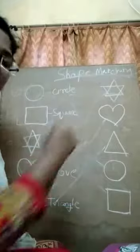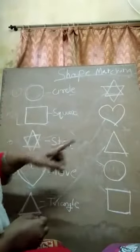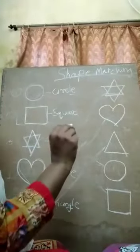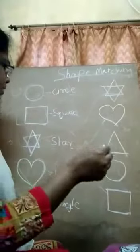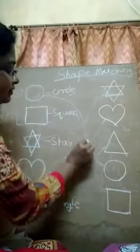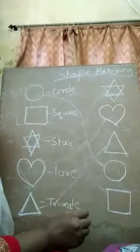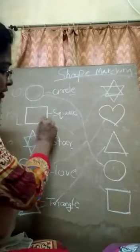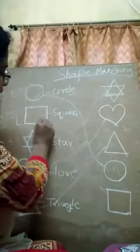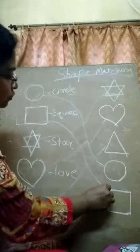Each one is a shape — I am going to make a match in shape. Circle to circle — I am going to match this shape, you are going to turn to circle. Which is a shape circle. Next, square to square.